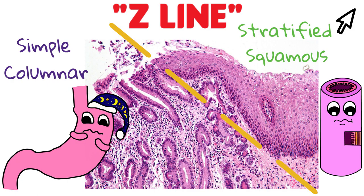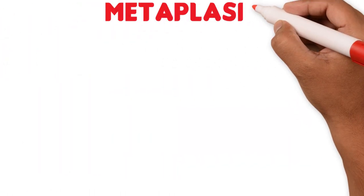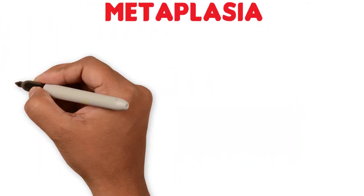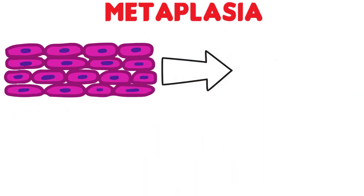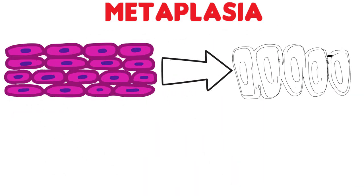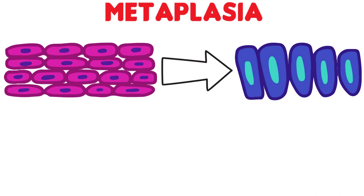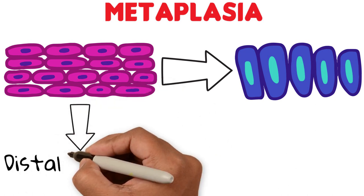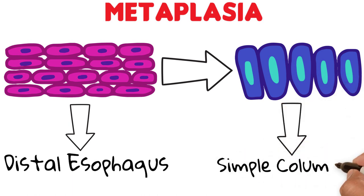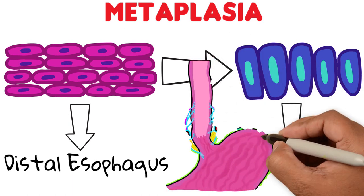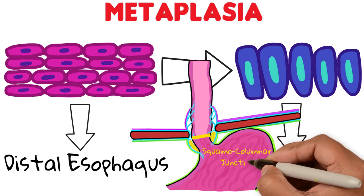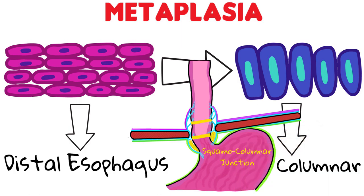Barrett's esophagus develops through a process known as metaplasia, which basically means that one type of fully differentiated tissue with its cells is replaced by a completely different type of tissue and cells. In this case, the normal epithelium of the distal esophagus is replaced by a simple columnar epithelium. This causes the Z-line, also known as the squamous-columnar junction, to migrate superiorly from its normal position.